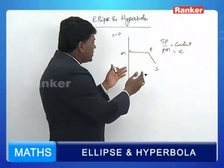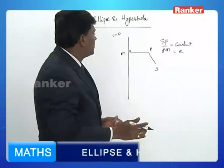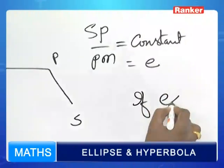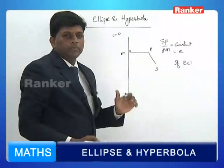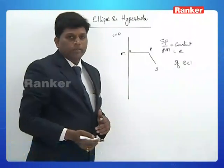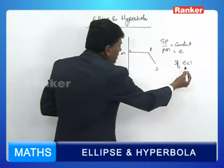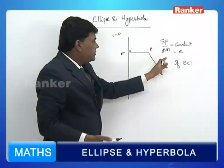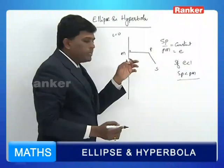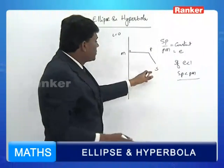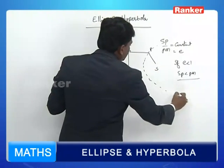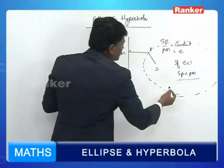Based on the numerical value of e, we categorize various types of conic sections. If e is less than 1, the locus will give you an ellipse. When e is less than 1, SP by PM is less than 1, meaning SP is less than PM — the variable point P is always closer to the focus compared to the fixed line. If we trace out such cases, we will get various points forming the ellipse shape.